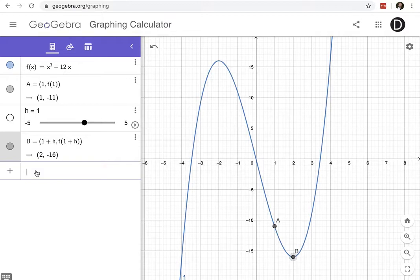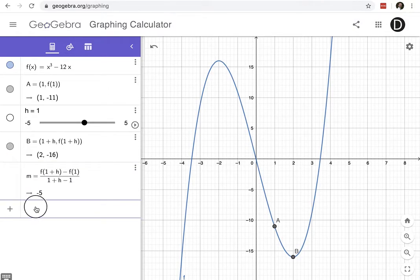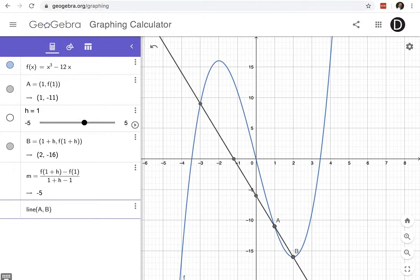So if I were to find the slope here, my slope is equal to the fraction where I take the second point f of 1 plus h minus f of 1 and I'm going to divide by the 1 plus h minus 1. And so the line that joins point A with point B has a slope of negative 5. And let's create that line. So we have a line that joins A with B.